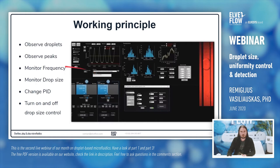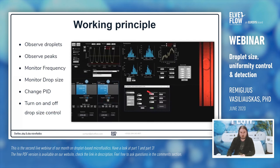The software looks like this. Here you can observe droplets in a live view and observe the peaks for every droplet. If you see something not right, you can change it. You can monitor the frequency of droplet production and see how it changes over time. You can also monitor droplet size and get statistics, change PID parameters if the system reacts too slowly or too fast, and turn the droplet regulation on and off.